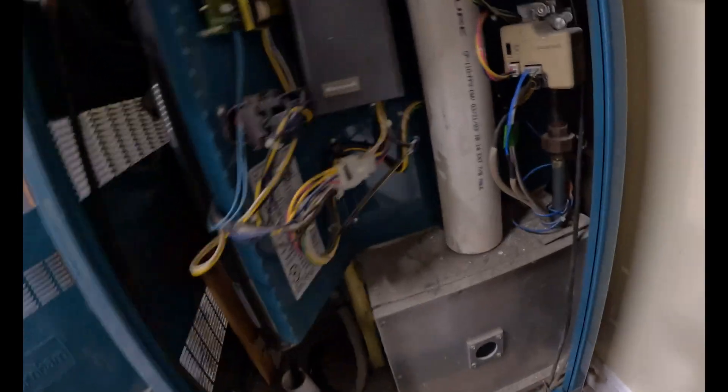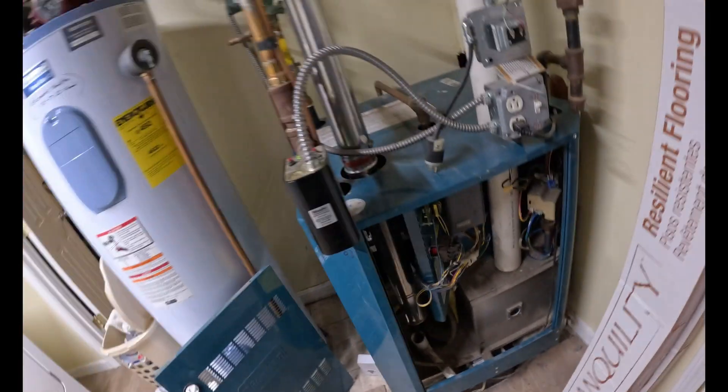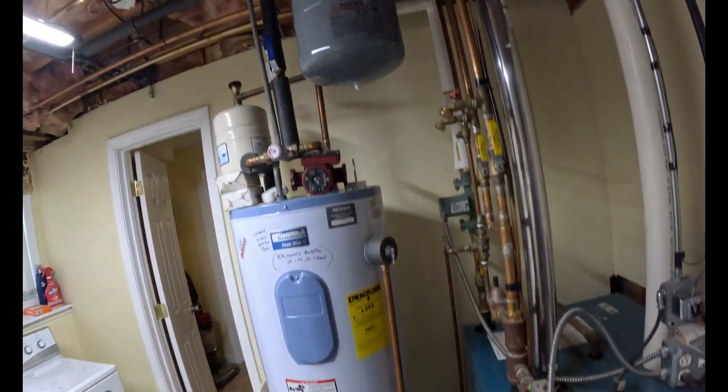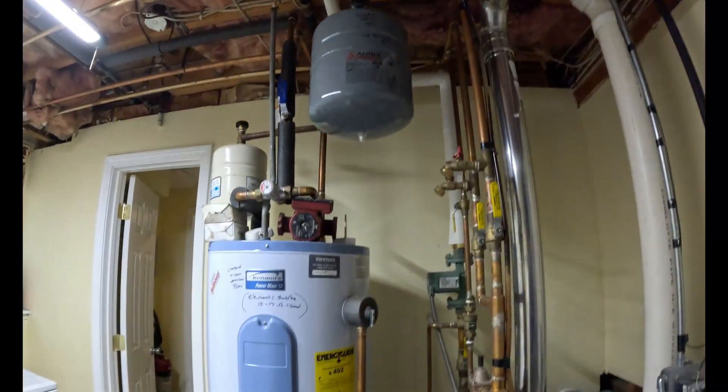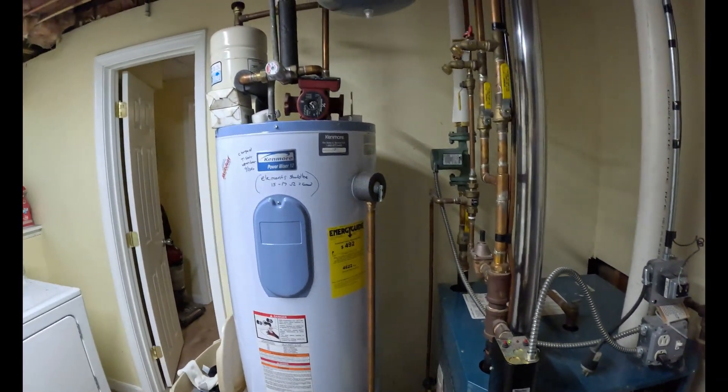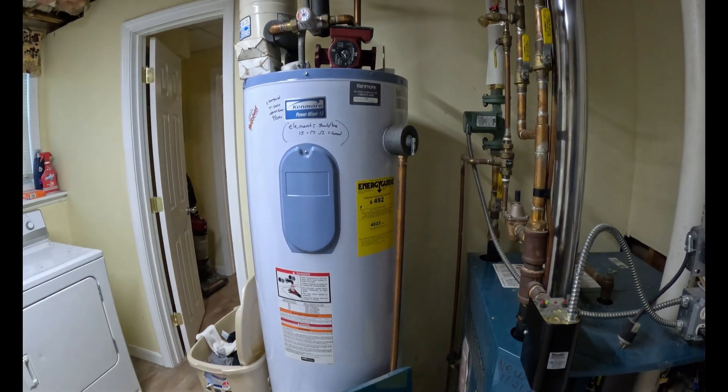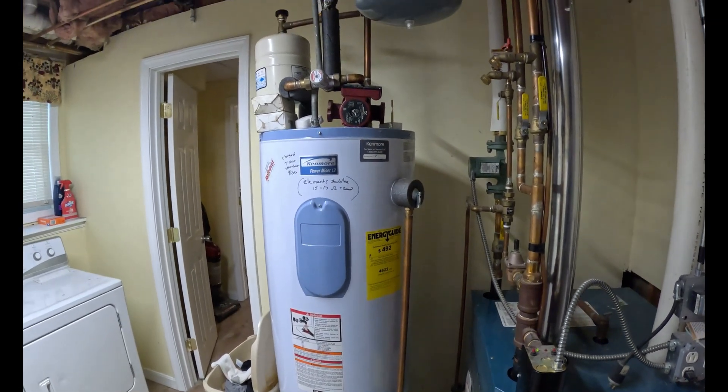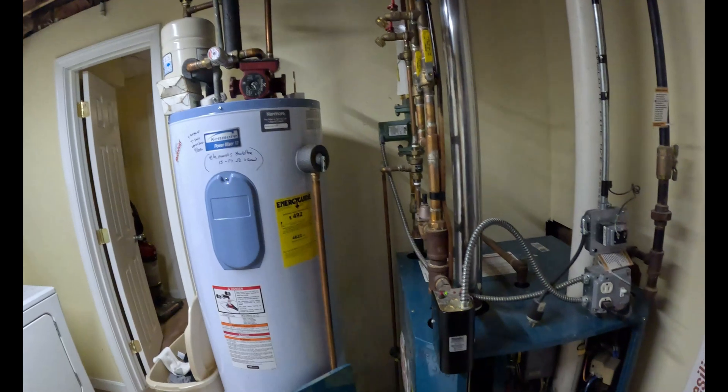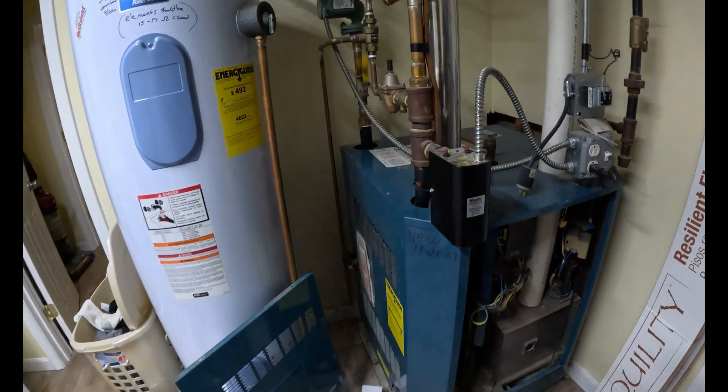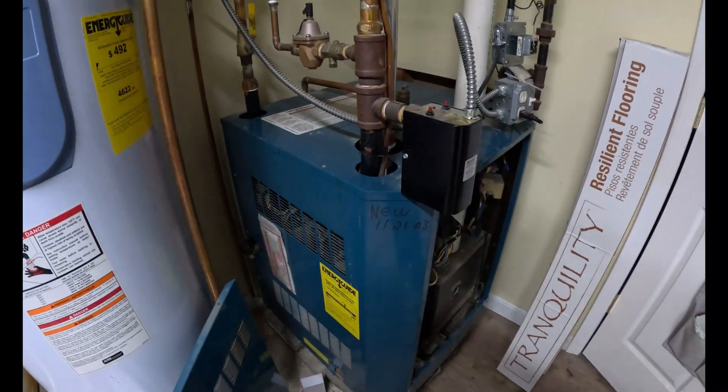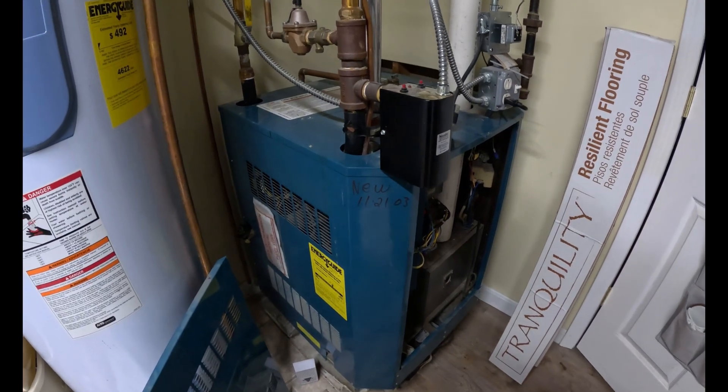If you wanted to add a Taco zone control board, you could do that pretty easily and run both these zones and then put an indirect. And currently this house has an electric water heater, which that may be getting changed to a heat pump water heater at some point. But this boiler was put in in 2003, she wants to keep running, so we're going to let her keep running.